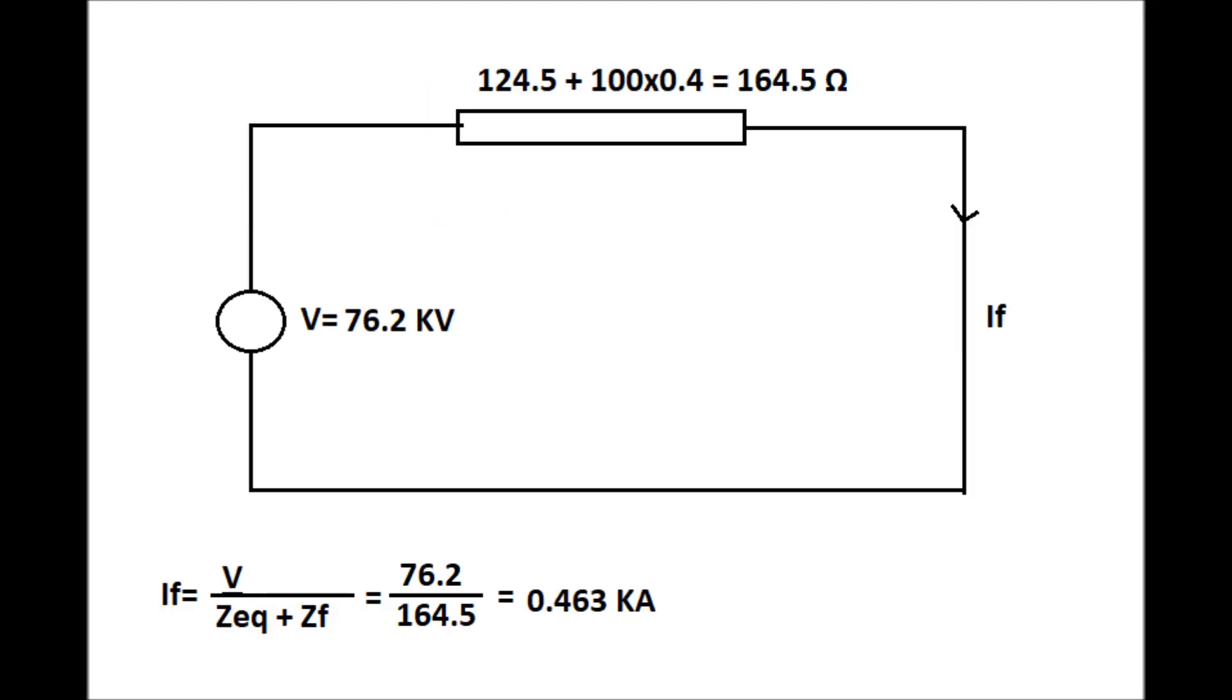The equivalent circuit for fault calculation is finally drawn in this figure. By this figure, we can now calculate the fault current for three-phase fault at point A. If will be equal to 76.2 by 164.5, that will come to 0.463 kiloampere.